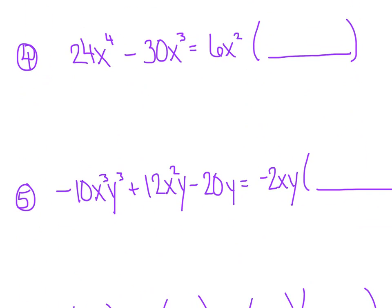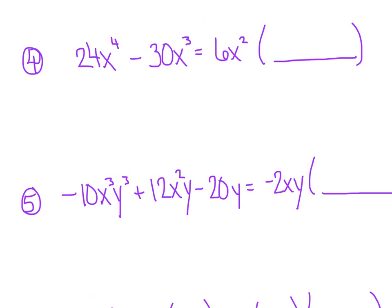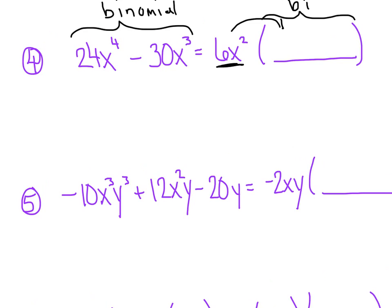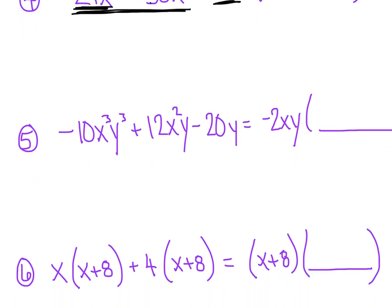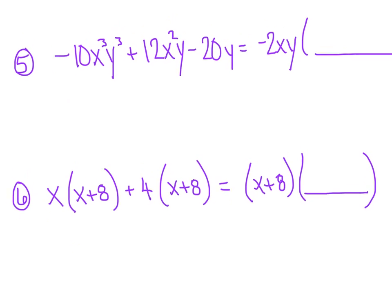Now here's what's going to happen. Does everybody agree that this term right here is a binomial? That tells us we're going to have a missing binomial on the other side too. Focus on the first term: it's like taking 6x squared and distributing it into a mysterious binomial to produce 24x to the 4th minus 30x cubed. 6 times 4 equals 24, and x squared times x squared makes x to the 4th. Carrying the minus sign over: 6 times 5 makes 30, and x squared times x to the 1st makes x cubed.